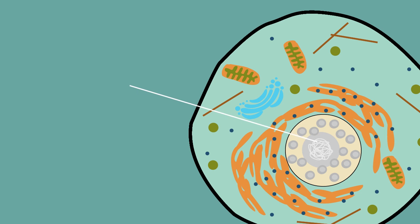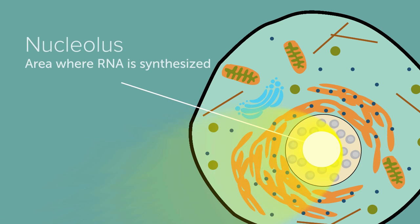Inside the nucleus is an area called the nucleolus. The nucleolus plays an important role in turning genetic information into reality. RNA is synthesized in the nucleolus from the DNA code that makes up who you are.